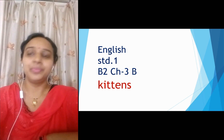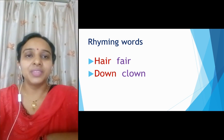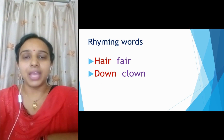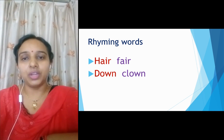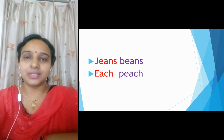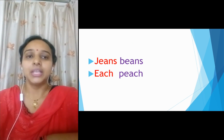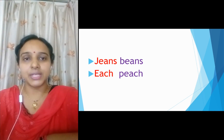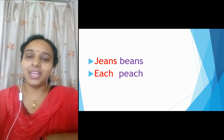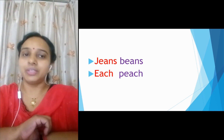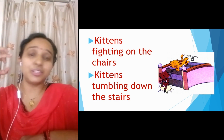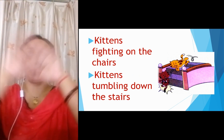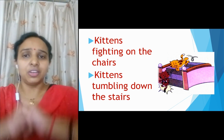So before starting the second stanza, we will go through the rhyming words. Here — H-A-I-R. Fair — F-A-I-R. Next is Down — D-O-W-N. Clown — C-L-O-W-N. Next is Jeans — J-E-A-N-S. Beans — B-E-A-N-S. Next is Each — E-A-C-H. Peach — P-E-A-C-H. Okay?